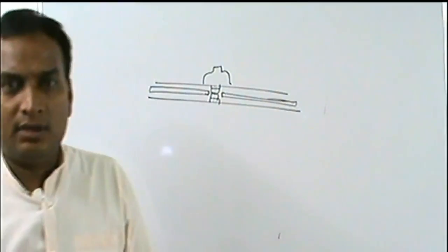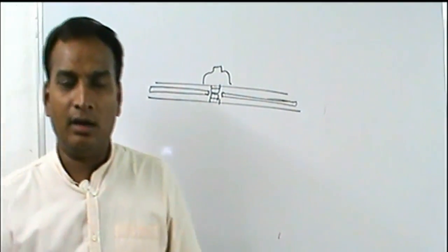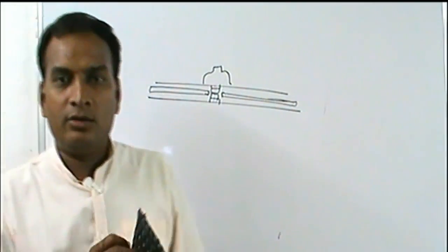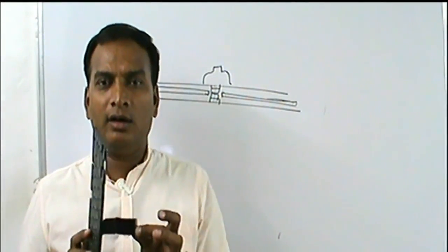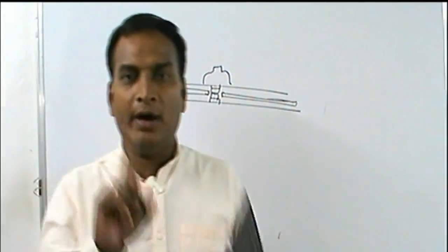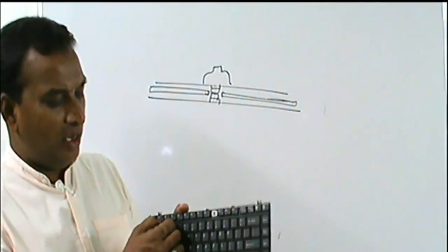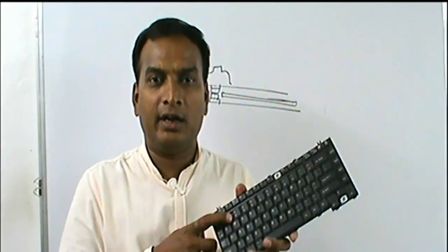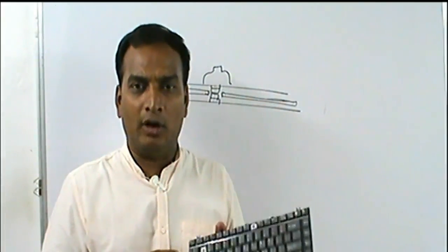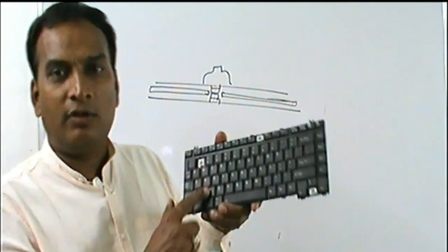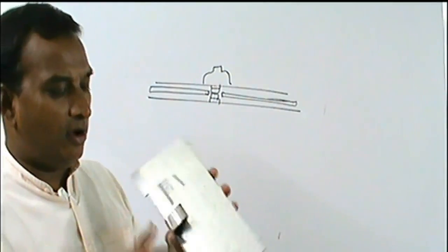Now let's discuss problems regarding the keyboard. A common problem is a particular key not working. If only one key is not working, that is a keyboard problem — not the cable or the motherboard — and it is one hundred percent a keyboard fault. Maybe the keypad contactor is erased or burned out, and you need to replace the keyboard. The second problem is when a particular row or column stops working — two or three keys are not working. In that case, it is a particular cable line problem.